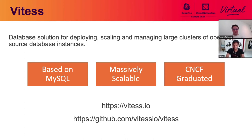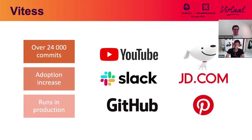Vitesse is massively scalable and is a CNCF graduated project. It runs on both public and private infrastructure and works very well with dedicated hardware. Vitesse has over 24,000 commits and is widely used by companies like YouTube, Slack, JD.com, GitHub, and Pinterest. It's popular among DBAs for horizontally scaling MySQL databases.